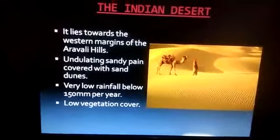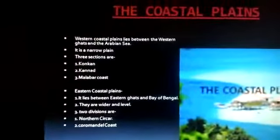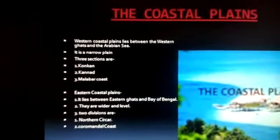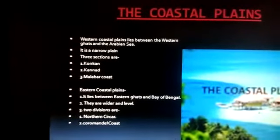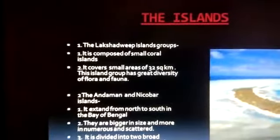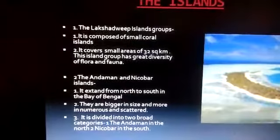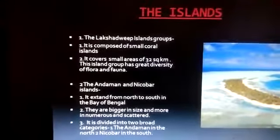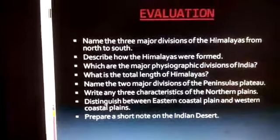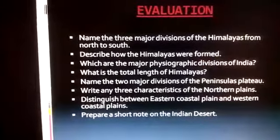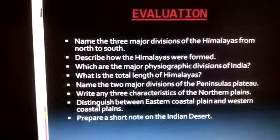Next are the coastal plains — the eastern coast on the right-hand side and the western coast on the left-hand side. The islands are the beauty of India. The two main groups of islands are Lakshadweep and Andaman and Nicobar. After reading this chapter, you will complete the assignment on the physical features of India.